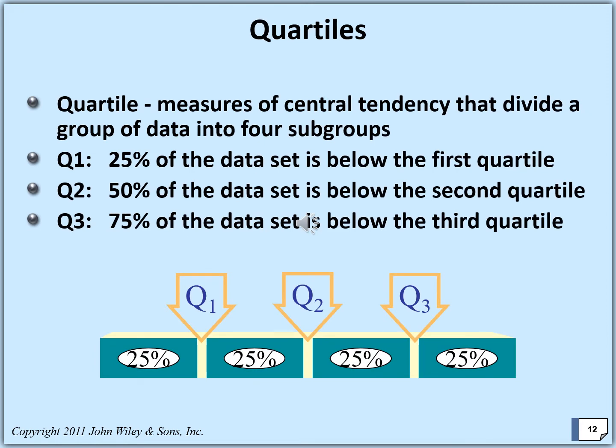Quartiles are measures of central tendency that divide a group of data into four subgroups. Three quartiles exist: Q1, Q2, and Q3. Q1 determines that 25% of the data set is below the first quartile. Q2 is the median, which divides the data into two halves — 50% of the data is below the second quartile and 50% is above. Q3 means that 75% of the data set is below the third quartile. Note that the ordering goes in ascending manner, not descending.